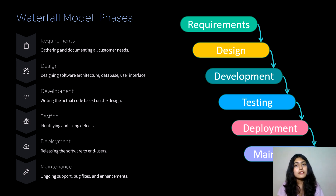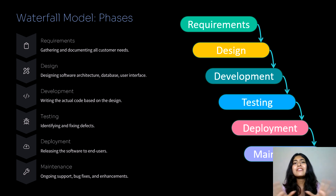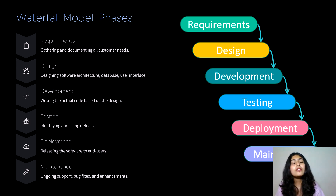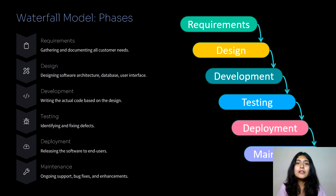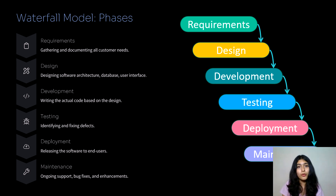The next step is design. In design, software tools are used to basically give a structure to the project or website. The next step is development, which is writing the source code for the project or website.